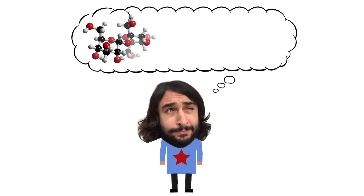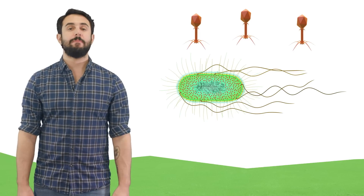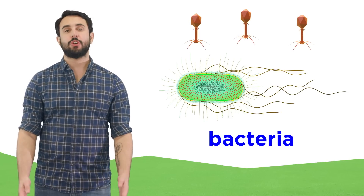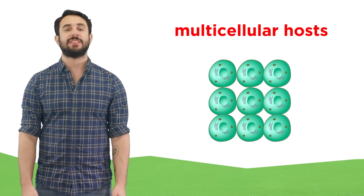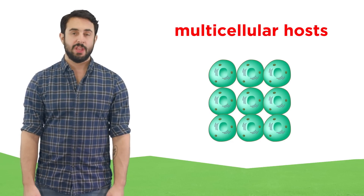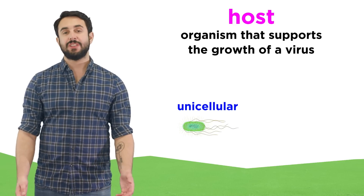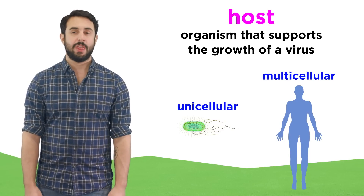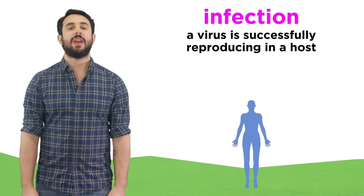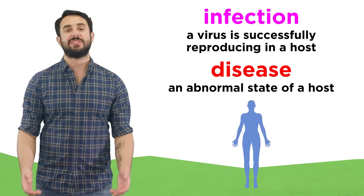Professor Dave again. Let's continue with virus-cell interactions and review some basic terminology. We've gone over certain terms as they relate to viral infection of bacteria, but let's make sure we understand each of them in the context of multicellular hosts as well. A host is an organism that supports the growth of a virus — this could be a unicellular organism, but also animals, including humans. An infection refers to a virus successfully reproducing in a host, and disease refers to an abnormal state of a host.